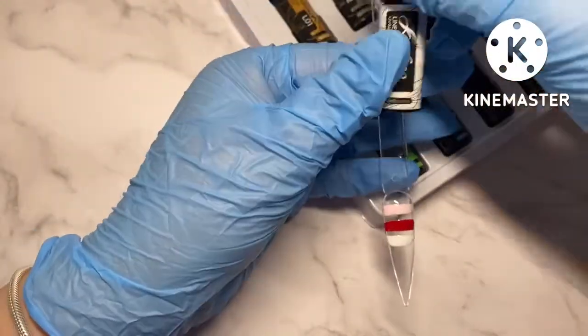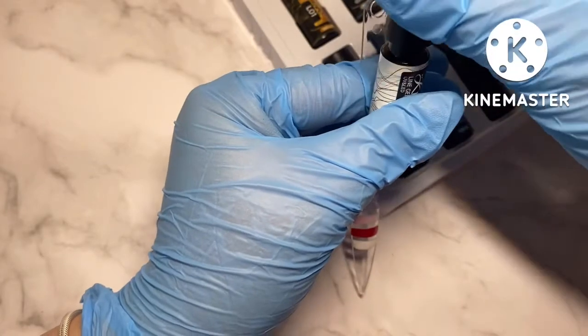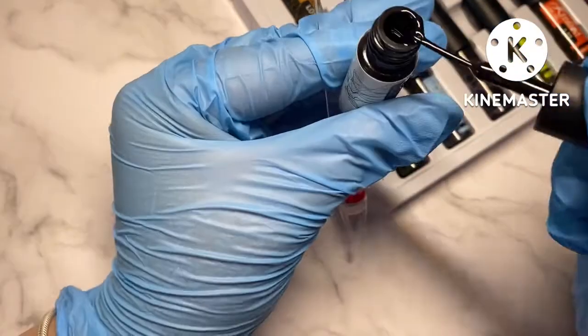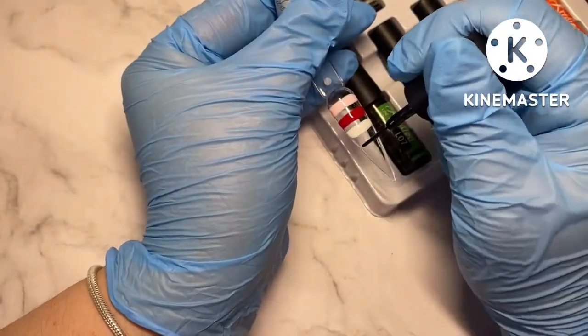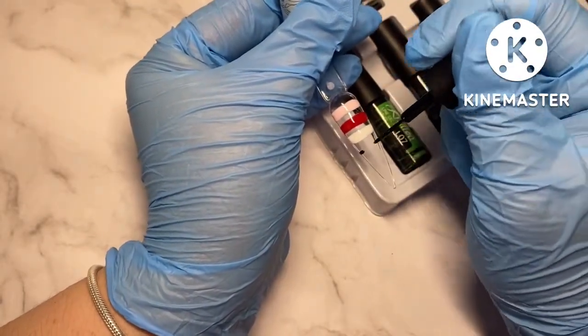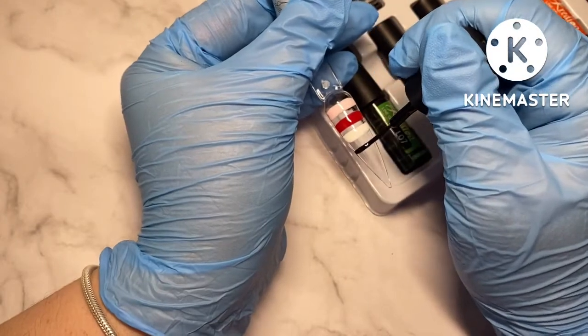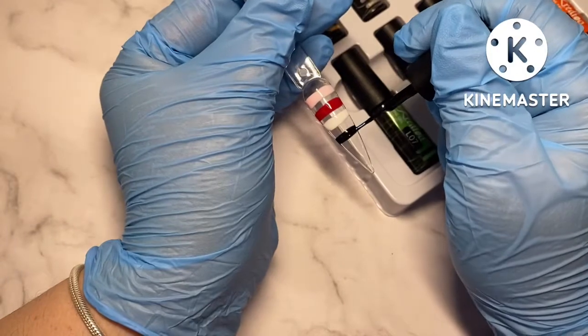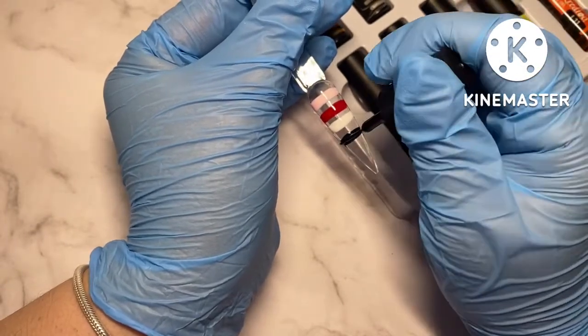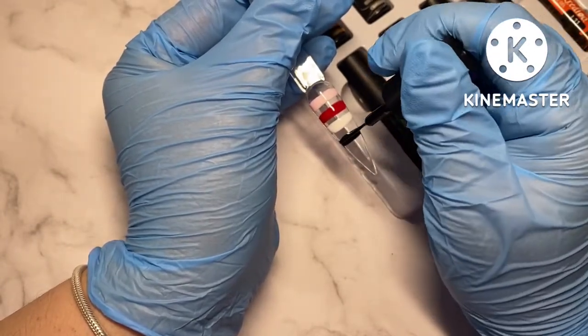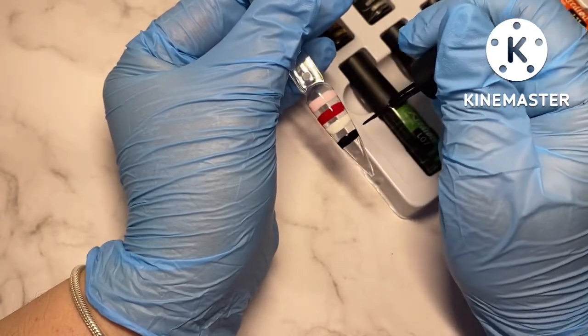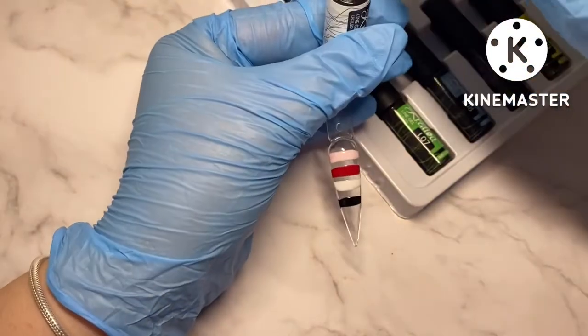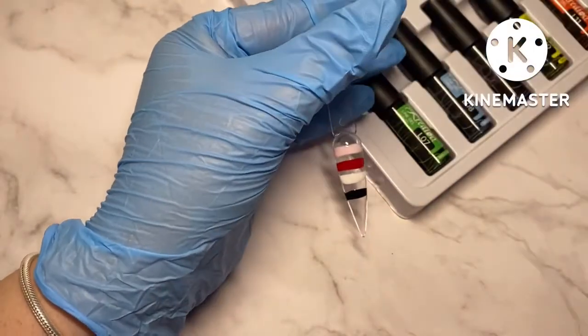So now this is the black. Yeah, it's definitely a black. Let's see what the opacity is like with this. It looks good. We all know we've got to do a thin coat of black and white because otherwise they won't cure properly in a lamp, so this is a nice thin layer.